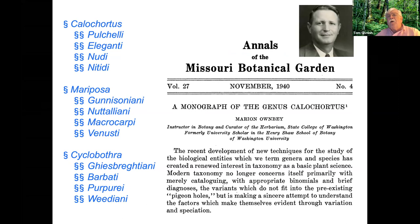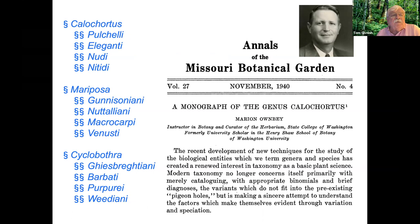Within Calochortus, Ownby recognized three subgenera, or sections, divided each into four subsections. Section Calochortus is marked by capsules with three wings, a single basal leaf present during flowering, an umbrella-like inflorescence, and smooth membranous bulb coats. Section Mariposa is characterized by three-angled capsules, flowering after the basal leaf has withered, a monochasial inflorescence, and smooth membranous bulb coats. Section Cyclobothra also has three-angled capsules and a monochasial inflorescence, but bears a fibrous reticulate bulb coat.